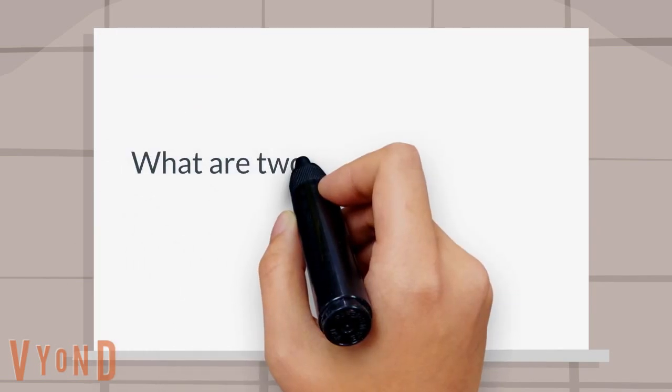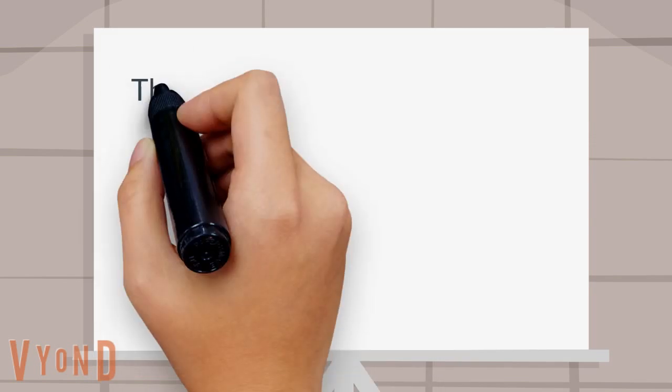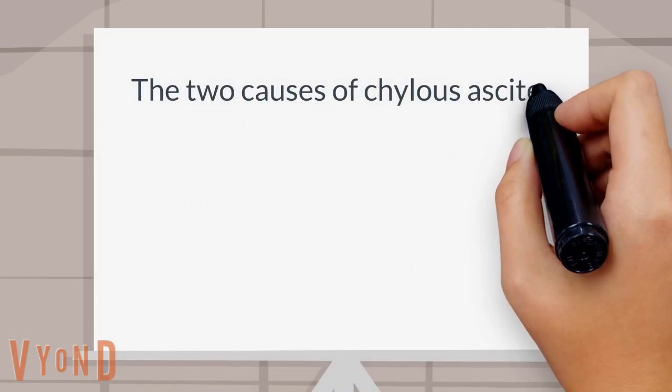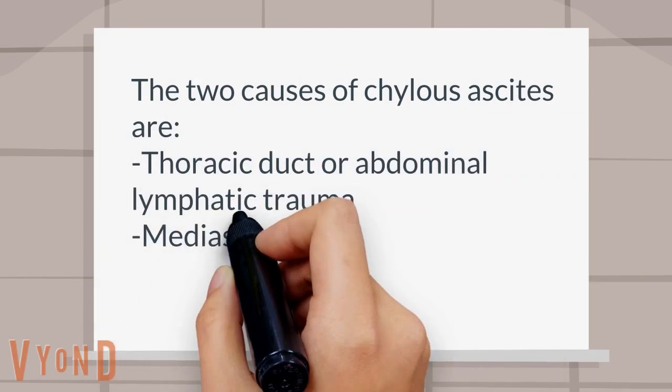What are two causes of chylus ascites? The two causes of chylus ascites are thoracic duct or abdominal lymphatic trauma and mediastinal tumors.